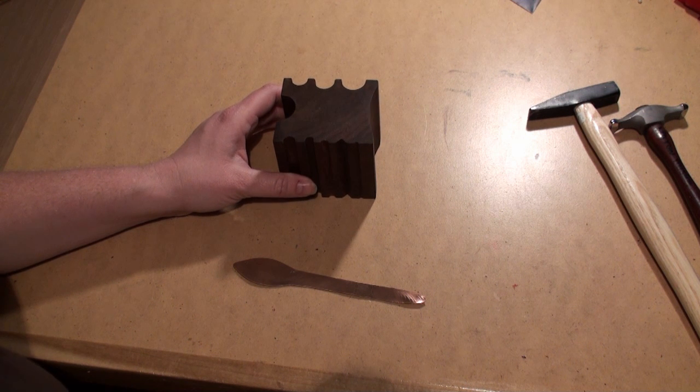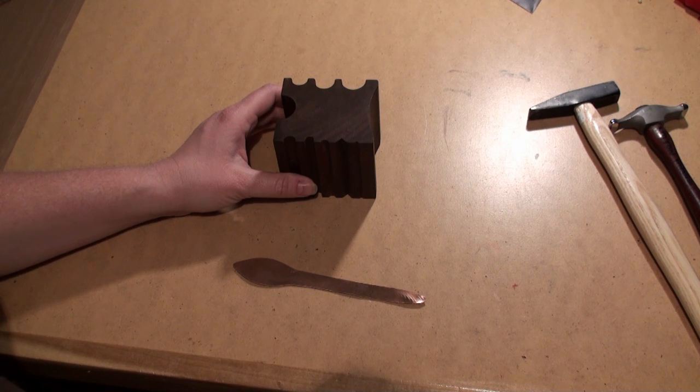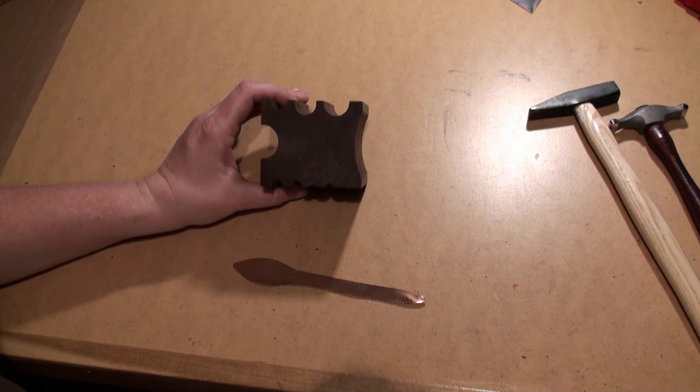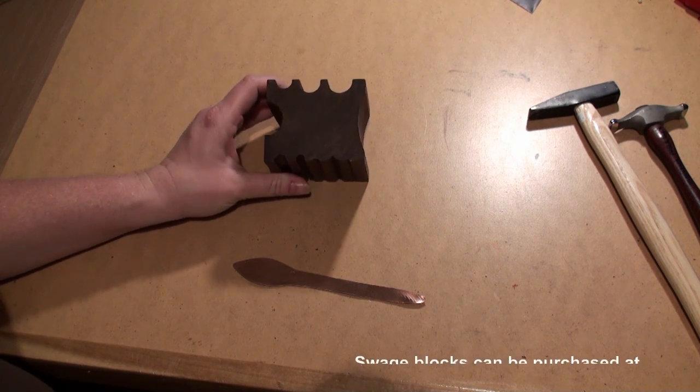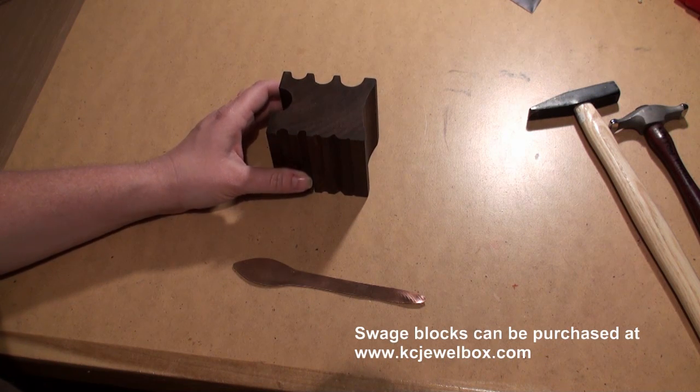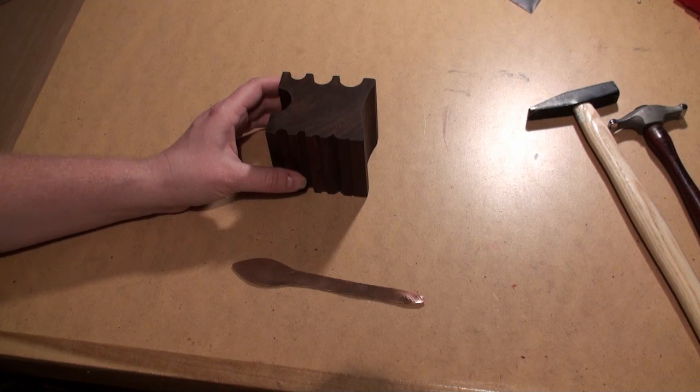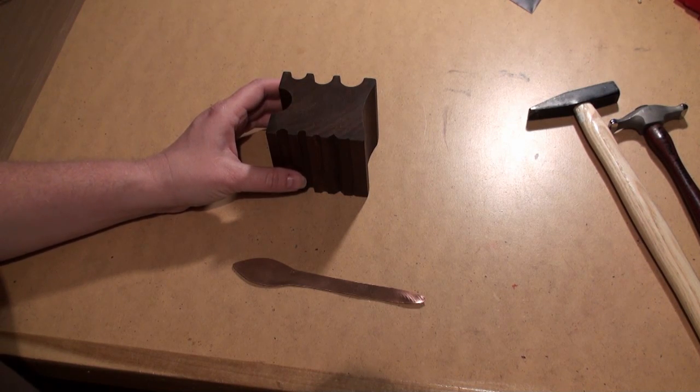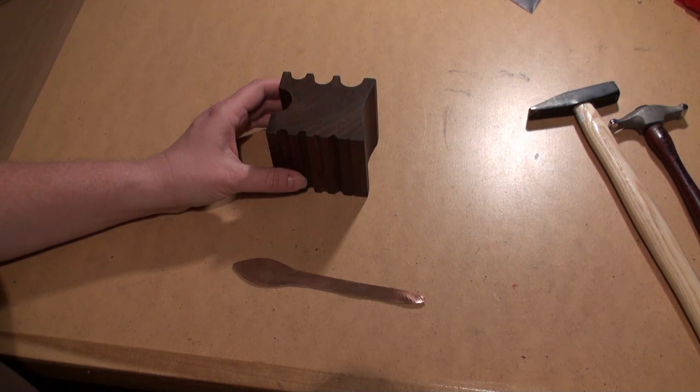Welcome to another Tool Time Tuesday. This is Melissa Muir. Today I'm going to talk about a new custom tool that I had made for me. This is called a swage block. Swage blocks can be made out of many types of material including wood, delrin, acrylic, nylon, and metal.